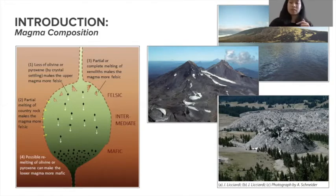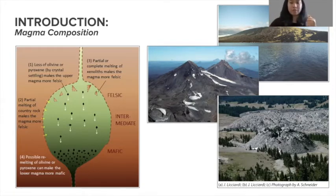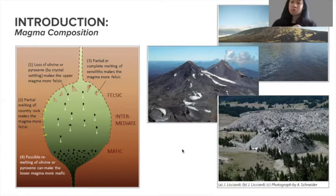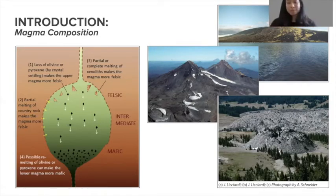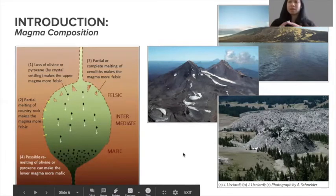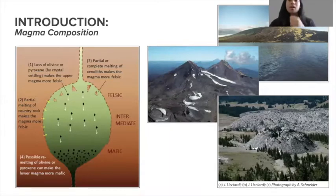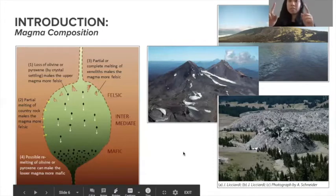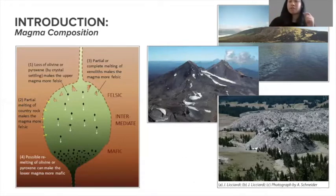Thinking back to Bowen's reaction series, mafic materials crystallize at higher temperatures, so in a magma melt they will be the first to crystallize out — mafic minerals first, then felsic minerals later. In places like mid-ocean ridges, where magma sources are shallower and oceanic crust is thinner, magma melts travel a shorter distance and produce more mafic magma. Whereas along convergent boundaries, where crust is thicker, magma travels further, giving more opportunity for mafic minerals to crystallize first and for partial melting of surrounding materials to introduce felsic minerals, so magma composition tends toward the felsic side.